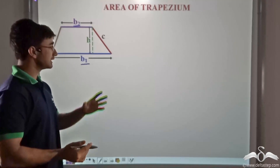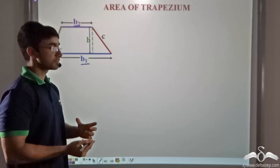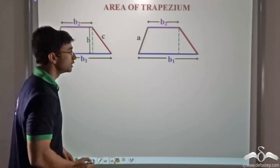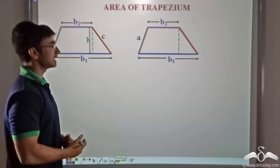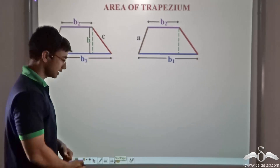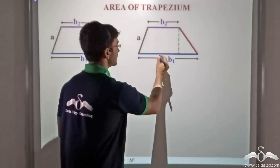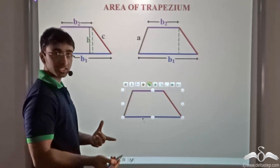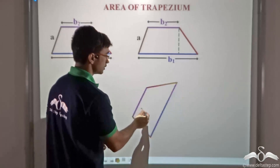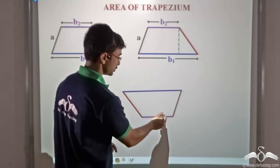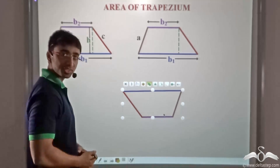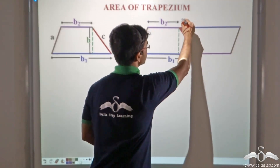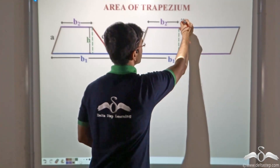In order to calculate the area, the activity we perform is to copy this trapezium exactly as it is, so we get a similar trapezium that is exactly the same. Then we take this particular trapezium and invert it — in other words, turn it upside down. We then take this inverted trapezium and place it beside the original trapezium.